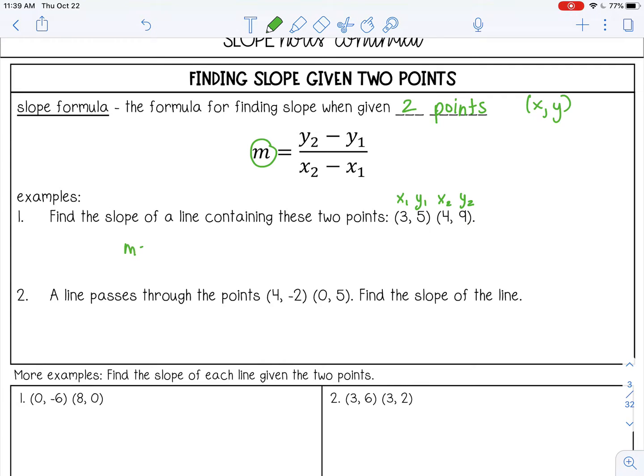So my slope is equal to y2 minus y1, so 9 minus 5, over x2 minus x1, so 4 minus 3. So I'm finding the difference in the y values over the difference in the x. So 9 minus 5, that's 4. 4 minus 3, that is 1. And that will reduce to 4. So my slope is 4.